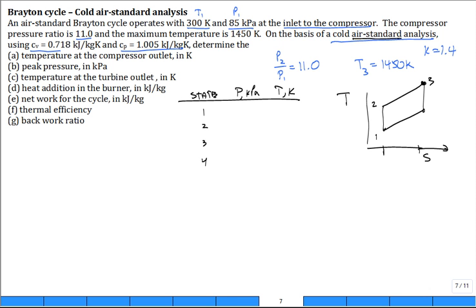So, let's go ahead and put in here 85 and 300. How do I get pressure at state 2? It's not 85 anymore, what is it? You multiply by the pressure ratio of 11. So, if you multiply by 11, you'll get some number. So, this is 85 times 11.